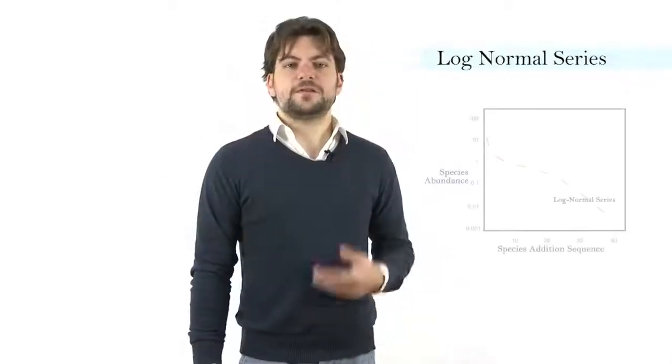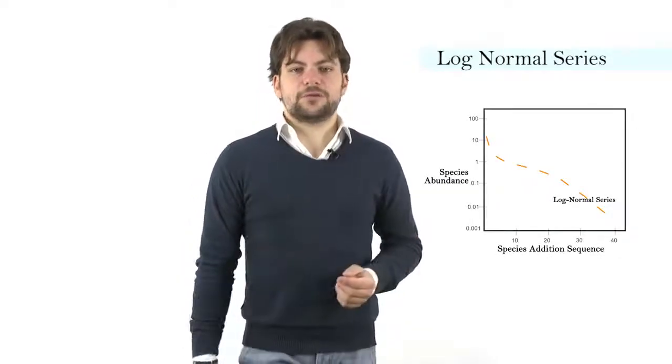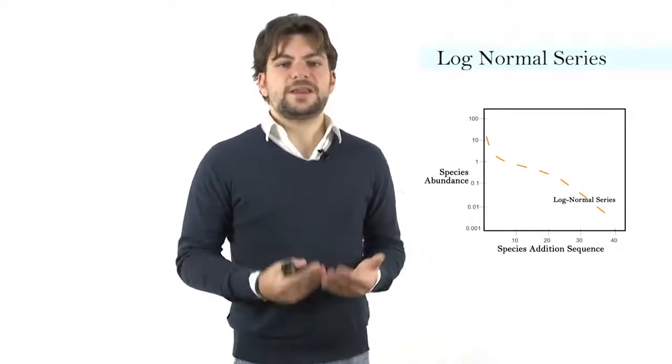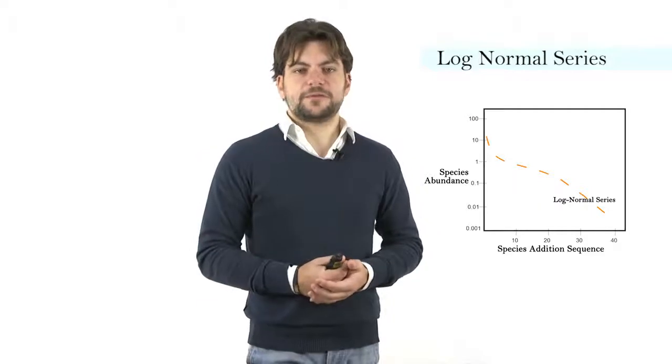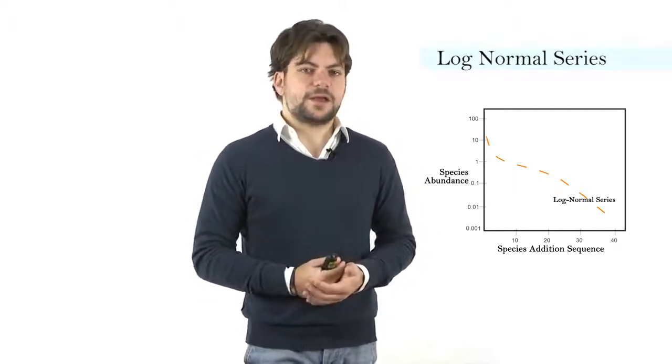The log normal series is the most common in natural communities, because many data from samples that we can collect in nature fit with the log normal series. These usually are large mature communities, representative of large mature communities. For instance, in temperate forest trees, we usually see this kind of distribution of the abundances.